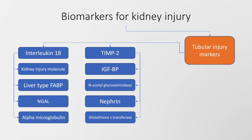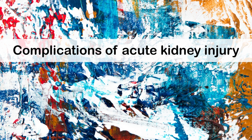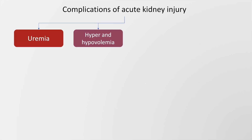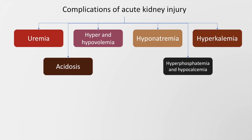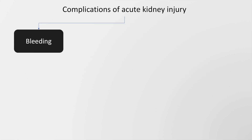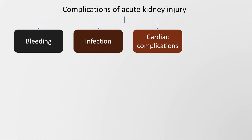The complications of acute kidney injury include uremia, hyper- or hypovolemia, hyponatremia, hyperkalemia, acidosis, hyperphosphatemia, and hypocalcemia. There may also be bleeding, infection, cardiac complications, and malnutrition secondary to acute kidney injury.